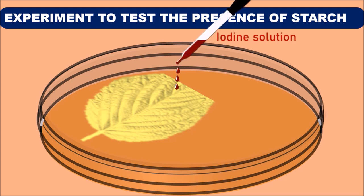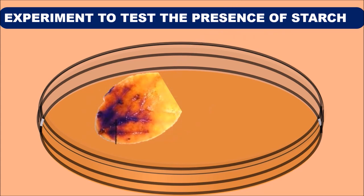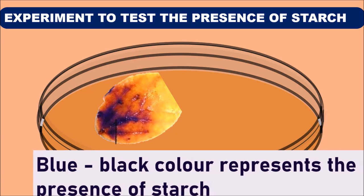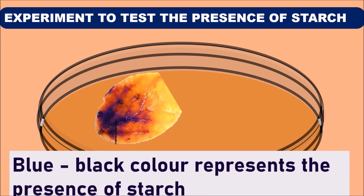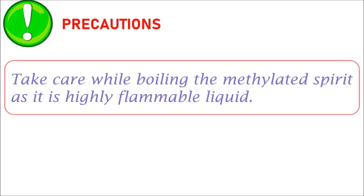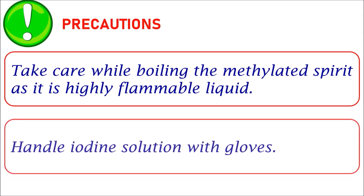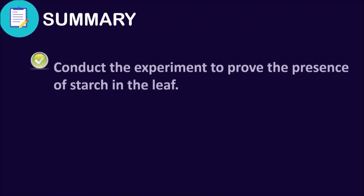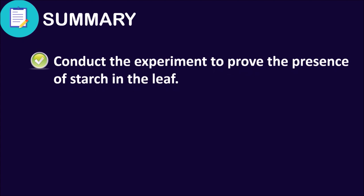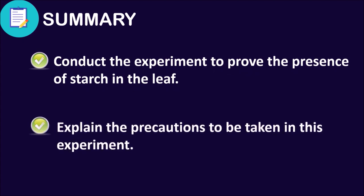You will be able to observe the blue-black color on the leaf. Blue-black color represents the presence of starch. Precautions: take care while boiling the methylated spirit as it is a highly flammable liquid; handle the iodine solution with gloves. Summary: this video has explained how to conduct the experiment to prove the presence of starch in the leaf, as well as the precautions to be taken.